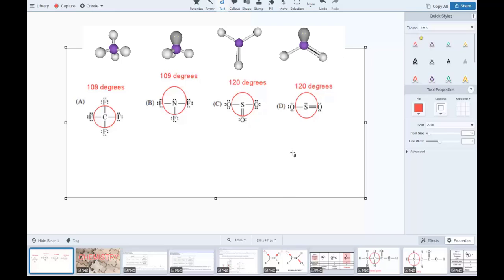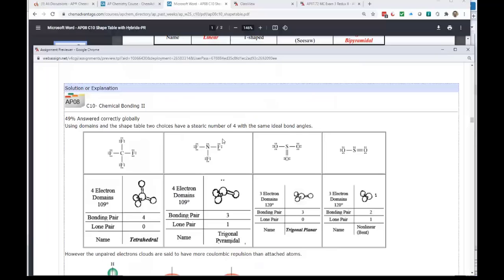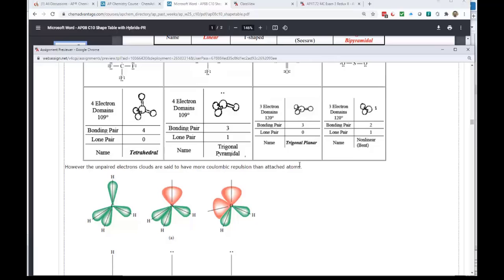Our question asked which one had the smallest bond angles, and we've got two choices. This is where we get the extra twist in AP chemistry. The summary shows tetrahedral, trigonal pyramidal, trigonal planar at 109 and 120, but what's not explained is that clouds of electrons take up extra space. These lone pairs aren't bonded to a nucleus - they're free to roam so they take up extra space.